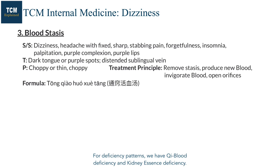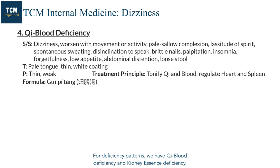For deficiency patterns, we have qi blood deficiency and kidney essence deficiency. We talked about these patterns in the last video, but here we have new formulas. For qi blood deficiency dizziness, we use Gui Pi Tang.